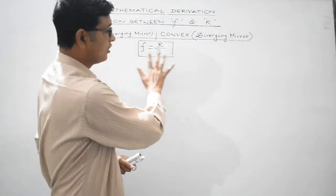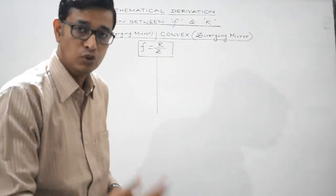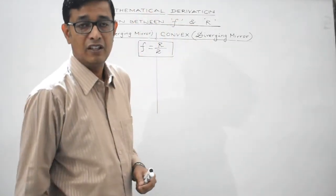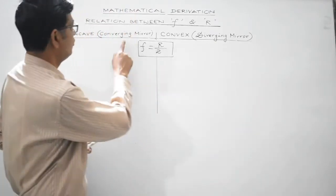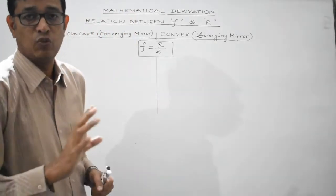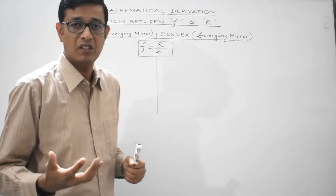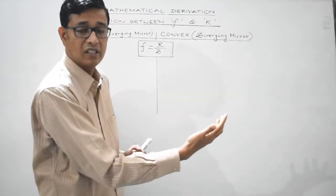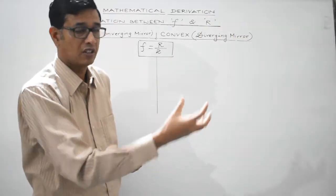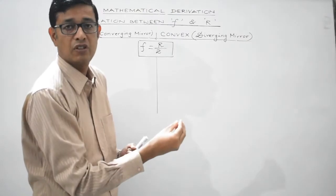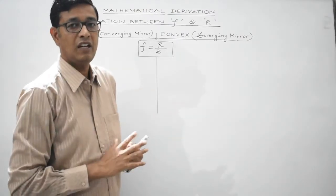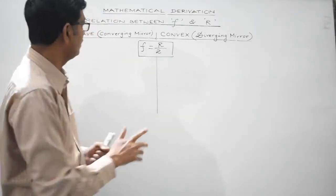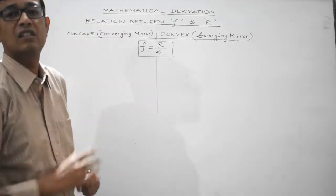We are going to mathematically prove this relationship for both converging as well as diverging mirrors. Converging means concave mirror. When a parallel beam of light is incident on a concave mirror, the rays after suffering reflection tend to converge at a particular point on the principal axis, and that particular point is known as the principal focus. That's the reason why a concave mirror is also known as a converging mirror.